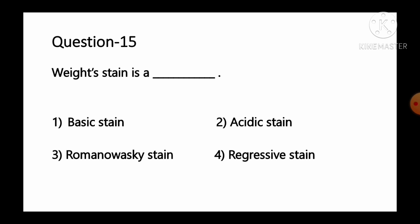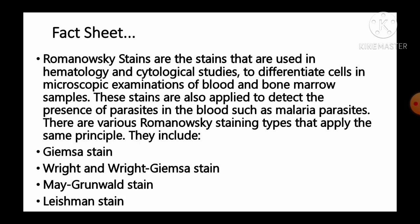Question number 15: Wright stain is a — option 1 basic stain, option 2 acidic stain, option 3 Romanovsky stain, option 4 regressive stain. Romanovsky stains are used in hematology and cytological studies to differentiate cells in microscopic examination of blood and bone marrow samples. Various Romanovsky staining types include Giemsa stain, Wright and Wright-Giemsa stain, May-Grünwald stain, and Leishman stain. Wright stain is an example of a Romanovsky stain. So option number 3 is the correct answer.